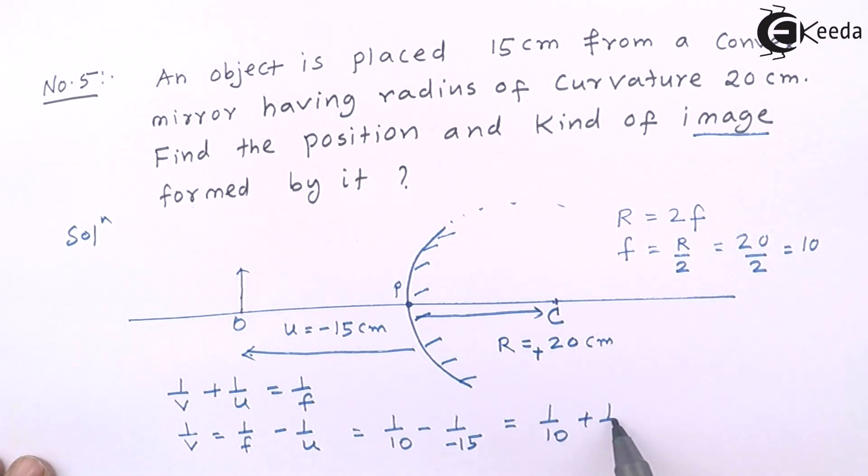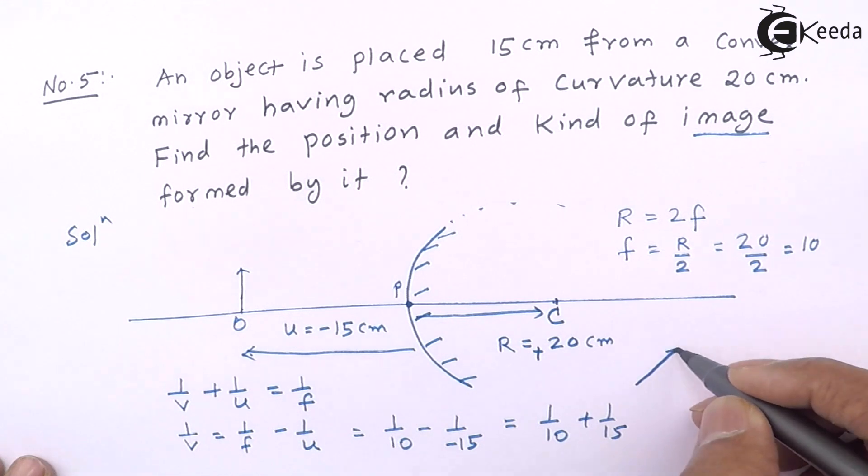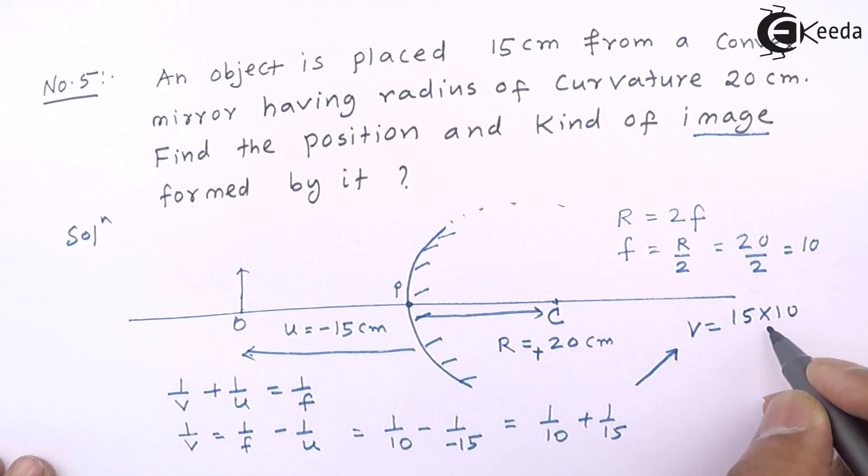That is also positive. So I will call this as 1/10 - 1/u. u is -15, so this becomes 1/10 + 1/15. If I calculate this,